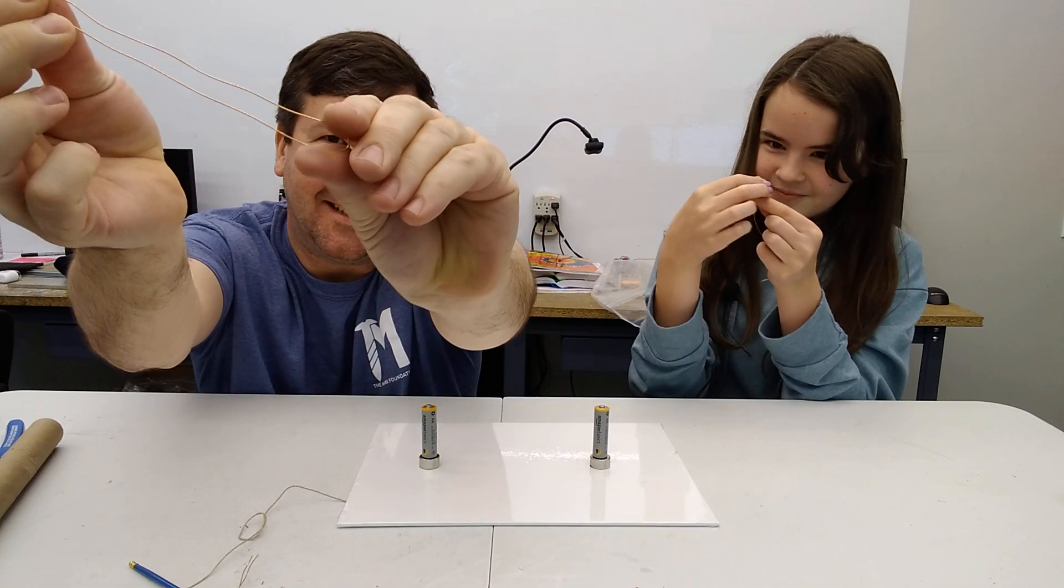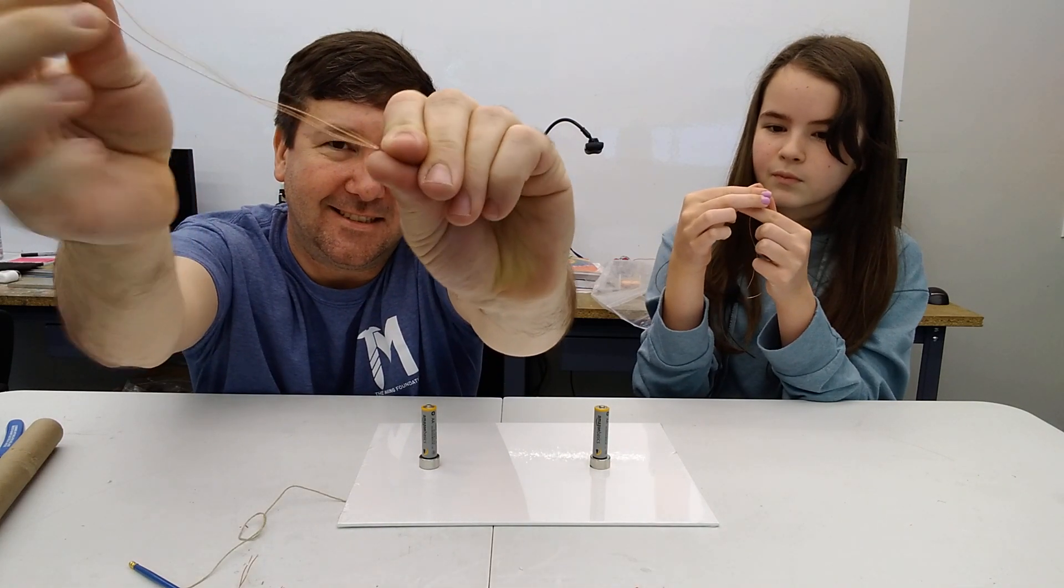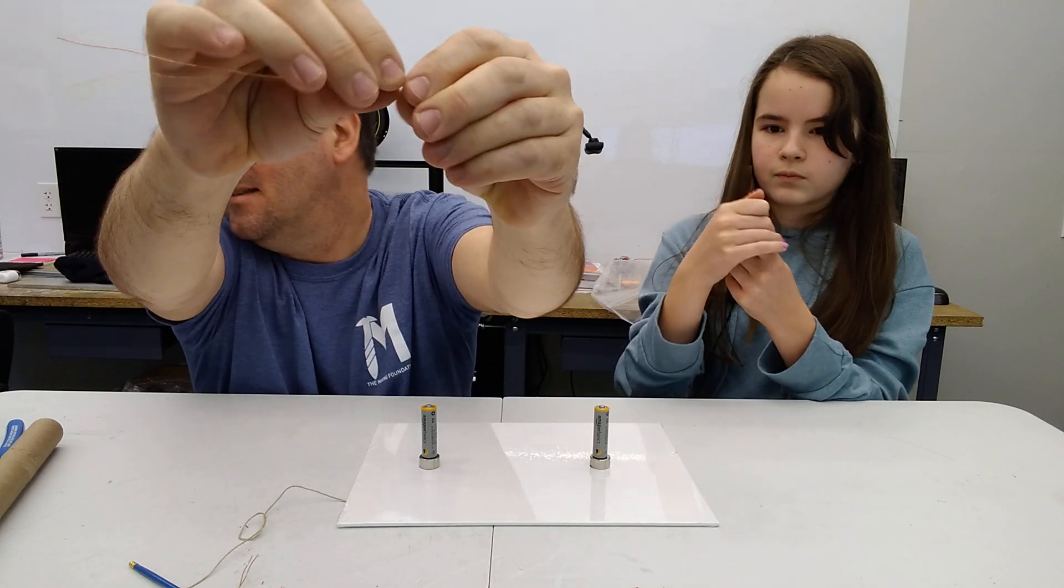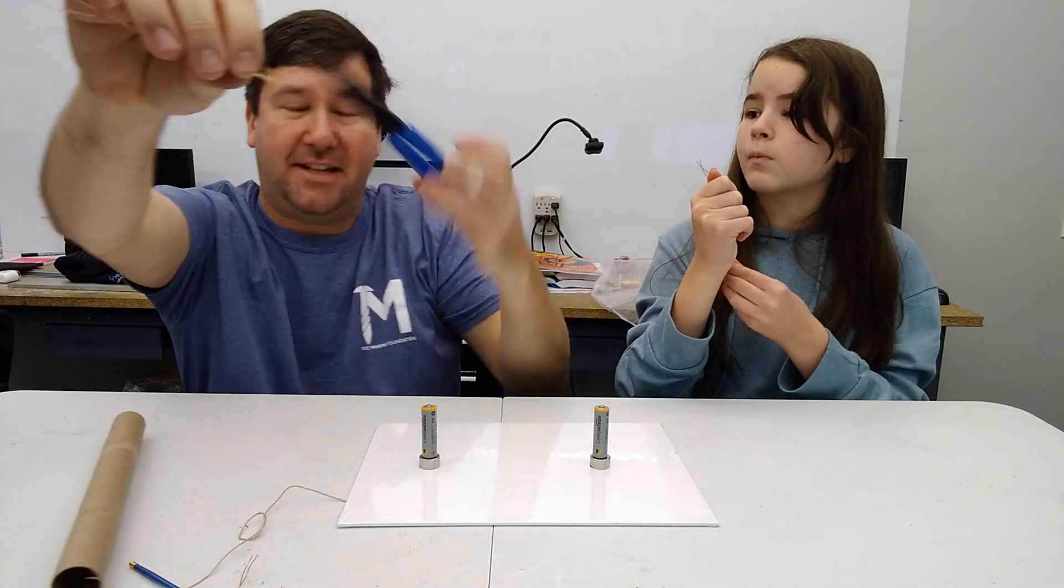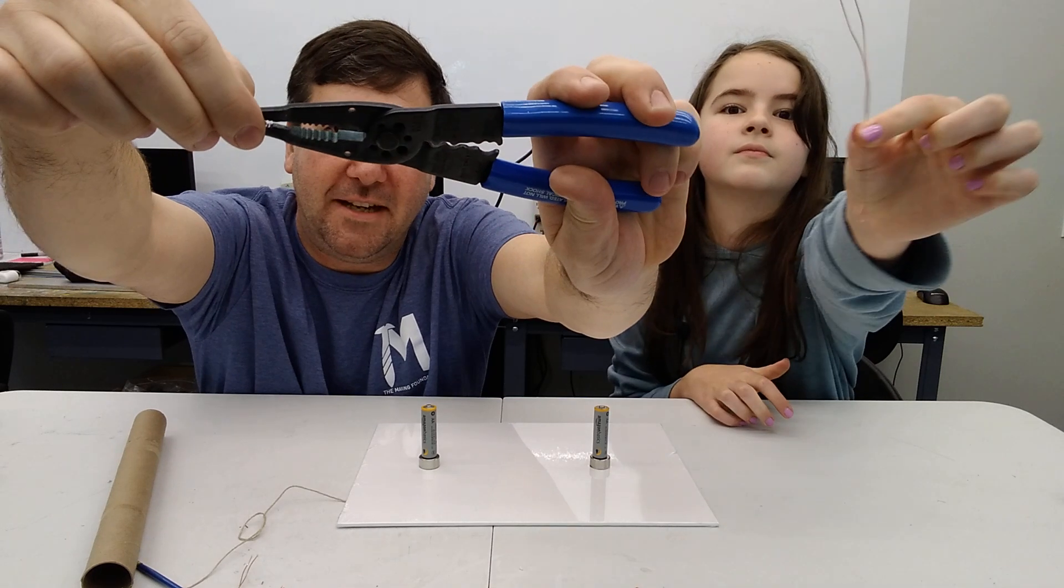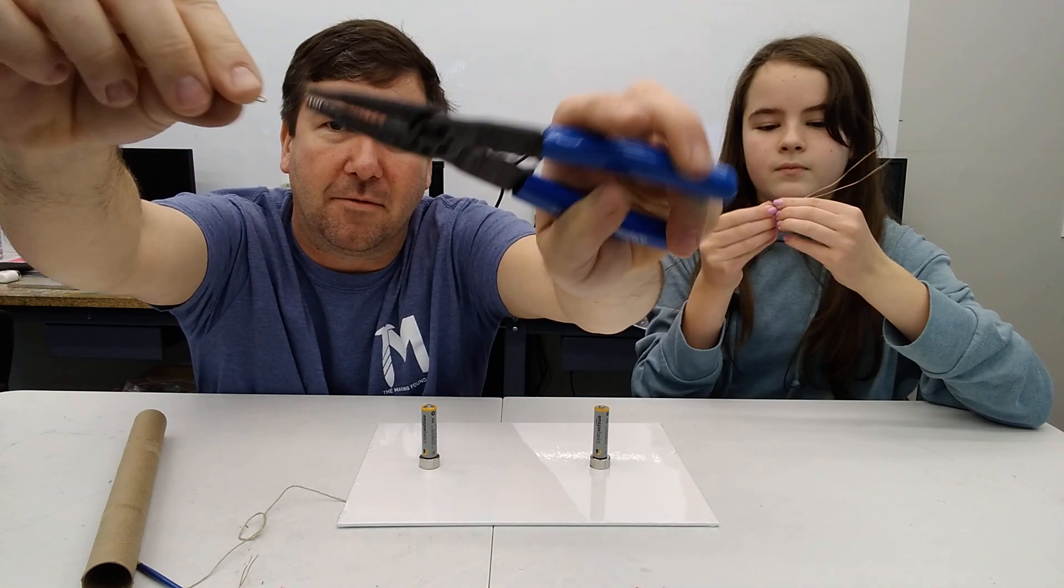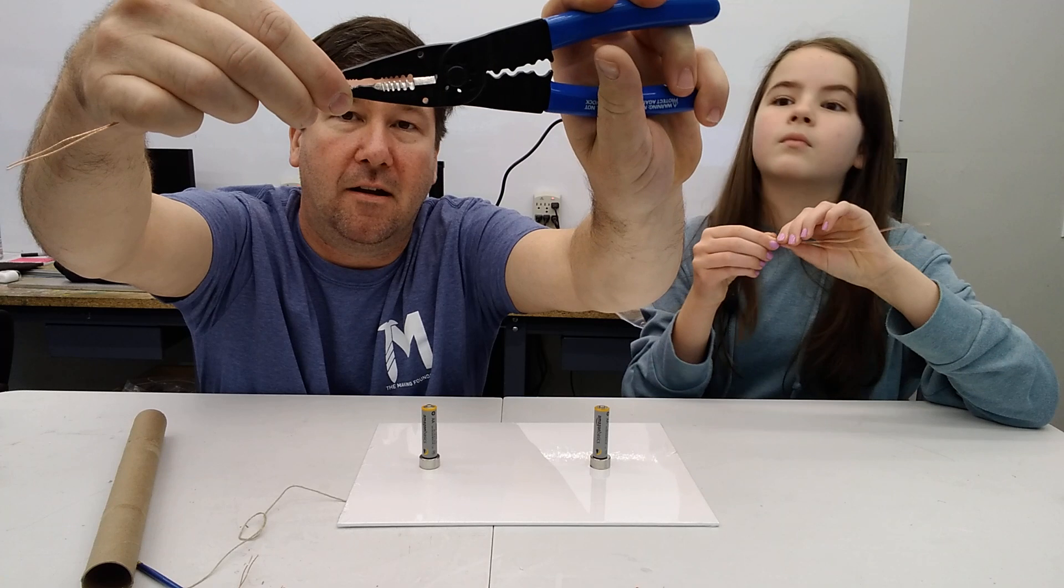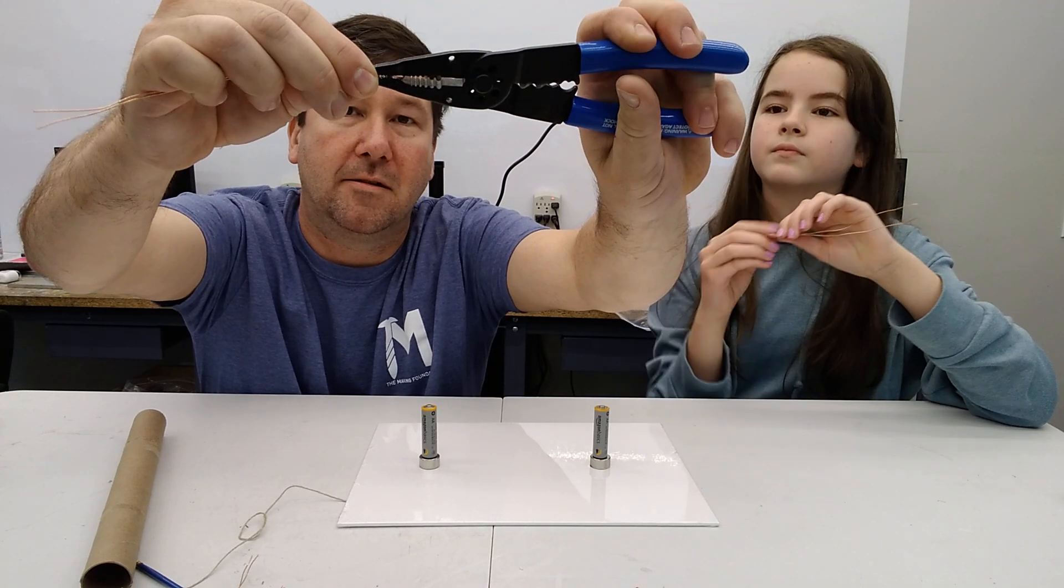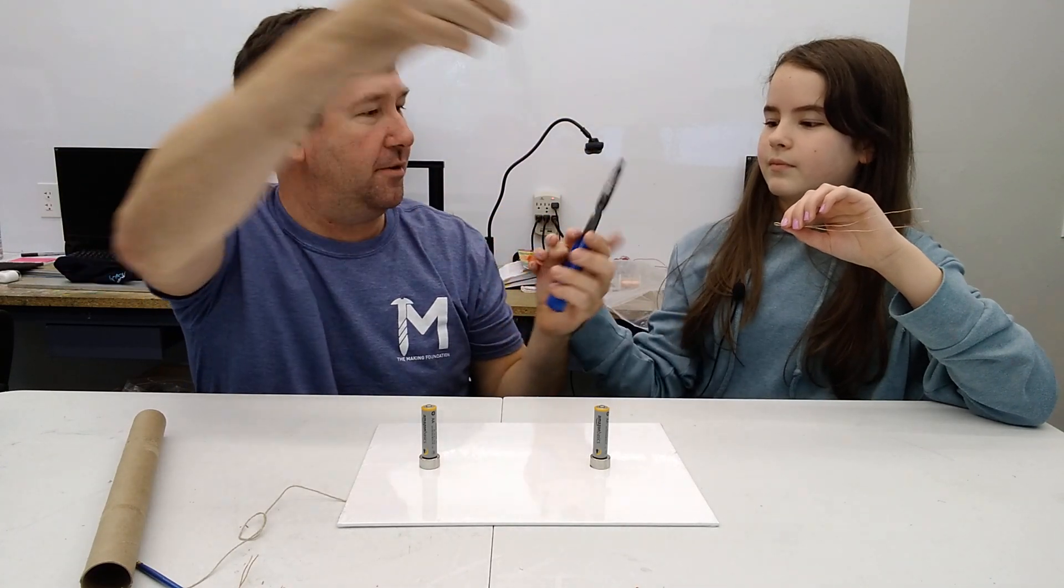And then you want to crease the other end of it. And then we're going to take some pliers and really crease the end really good so we have a sharp point on the end. You guys want me to do it, or you want to do it? You got it.